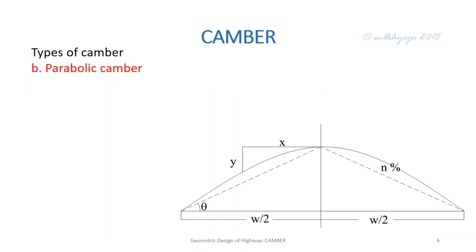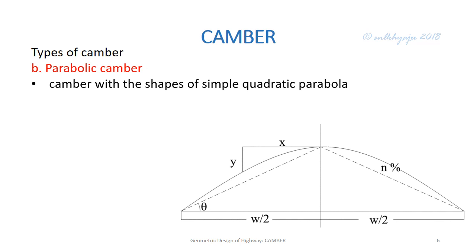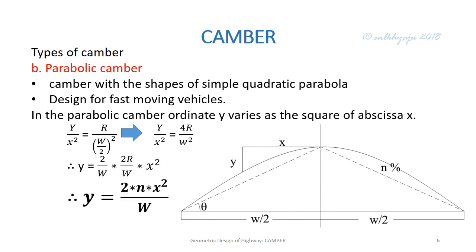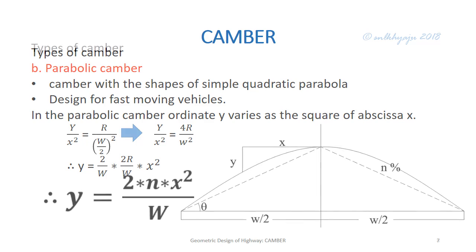The second type is parabolic camber, where the pavement surface is given the form of a simple quadratic parabola. This is designed for fast-moving vehicles. In the parabolic camber, the ordinate y varies as the square of the abscissa, i.e., y/x² = Y, where Y is the riser and x is w/2. Solving these equations, we get the final formula: y = 2nx²/w, where y is the vertical drop from the crown at a horizontal distance x.